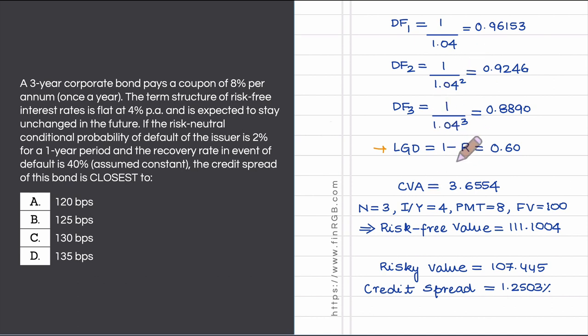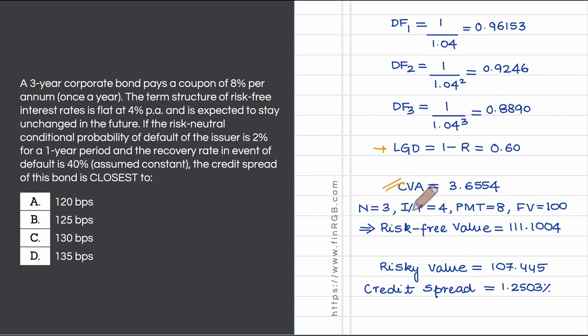We now have all the inputs. Plugging them into the CVA formula, the CVA comes out to 3.6554.